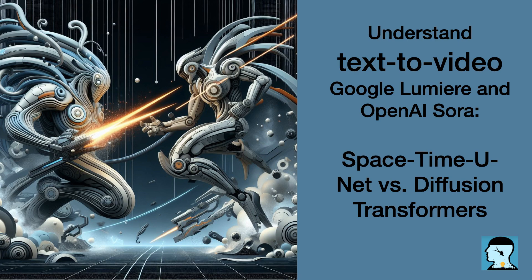In Lumiere, the space-time unit framework enables the model to determine object locations within the video's spatial context and track their movement and transformation over time. This allows Lumiere to generate videos in a seamless manner, by creating frames that flow into each other, resulting in a cohesive and realistic motion. The advanced spatial and temporal processing capabilities of space-time unit contribute to the generation of 80 frames in Lumiere, surpassing the 25 frames produced by other models like stable video diffusion.